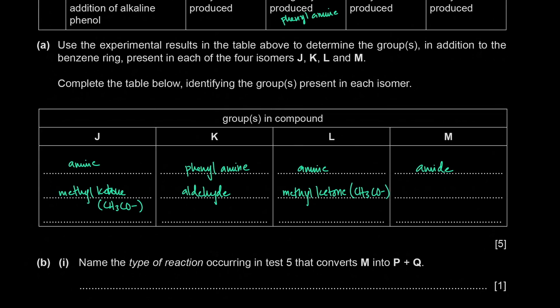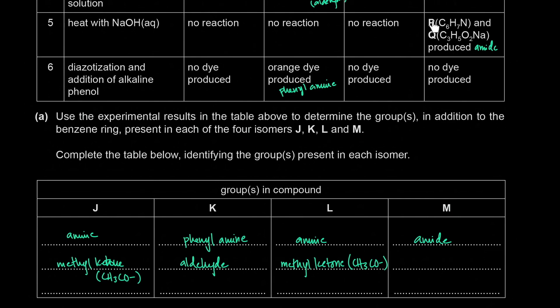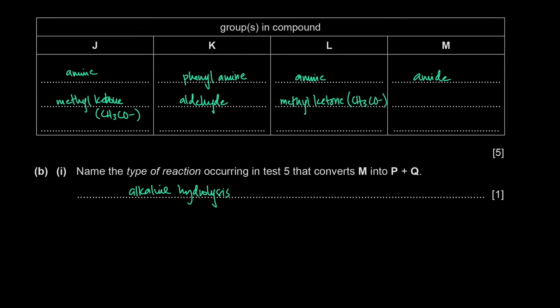The question asks to name the type of reaction occurring in test 5 that converts M into P and Q. That is alkaline hydrolysis — M was heated with aqueous sodium hydroxide. You can just say hydrolysis or alkaline hydrolysis.